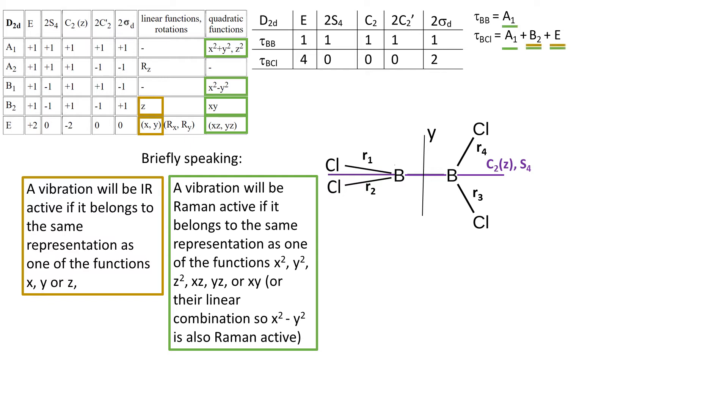IR active vibrations are the ones that belong to the same representation as one of the X, Y, or Z functions. So we see that all stretching vibrations will be Raman active, and B2 and E will be IR active as well.